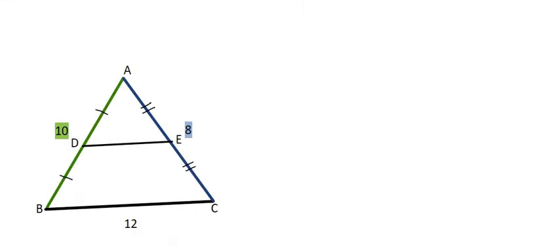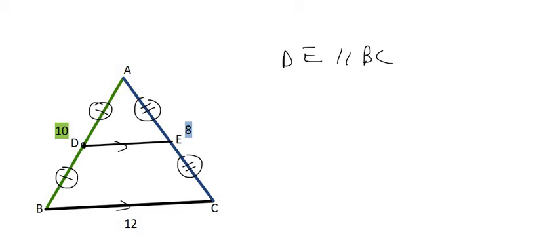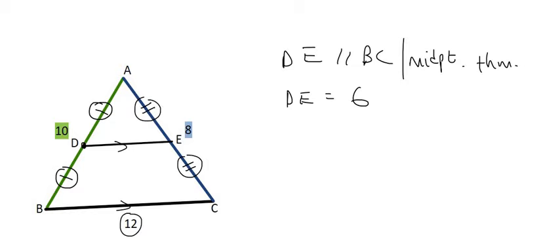Looking at one last example: here we've been given the midpoints of both sides, because we're told this length equals that, and that length equals that. So we have two midpoints. We can say DE is parallel to BC — reason: midpoint theorem. Furthermore, DE equals 6 because it's half of BC, and the reason is also midpoint theorem.